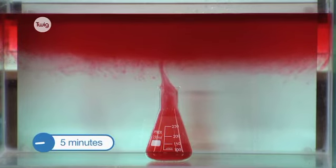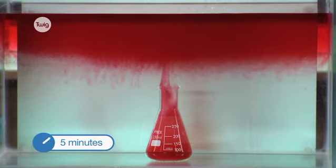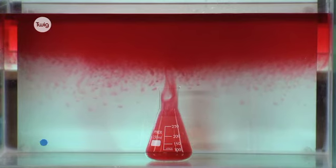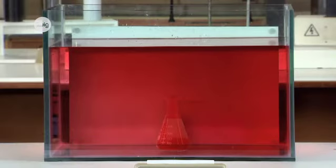Over time, the hot water is cooled by the cold, the cold water is warmed by the hot, and mixing takes place. The end result is a tank of warm water with the red coloring thinly dispersed.